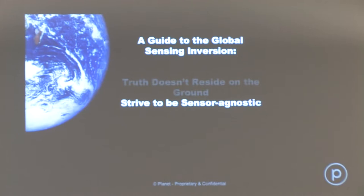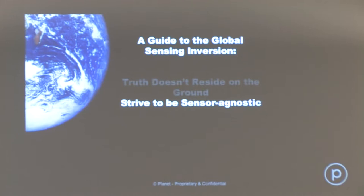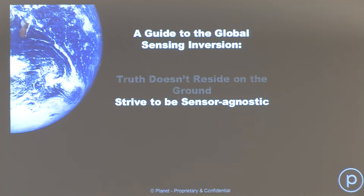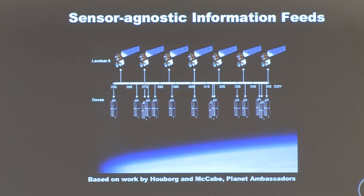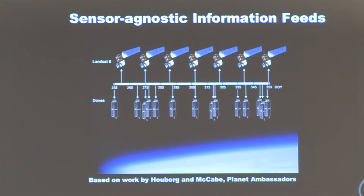The second thing I want to suggest is to strive to be sensor agnostic. Because we have so many assets going into space and drones, the tools you're building — if they're married to a particular suite of spectral bands — make it difficult to jump to a new sensor. We need the ability to toggle from sensor to sensor. Here I want to present some work by Rasmus Hoberg and Matt McCabe out of King Abdullah University in Saudi Arabia, dealing with this challenge in a powerful way.